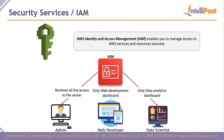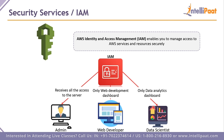IAM — Identity and Access Management — is a security service for access management. You may have multiple users in your AWS account: an admin, a web developer, and a data scientist. Each needs different access. A web developer only needs EC2 access for hosting HTML and JavaScript. A data scientist only needs metric data. An admin needs full access. Using IAM, you can create permissions and assign them to specific users so they cannot go beyond those permissions.